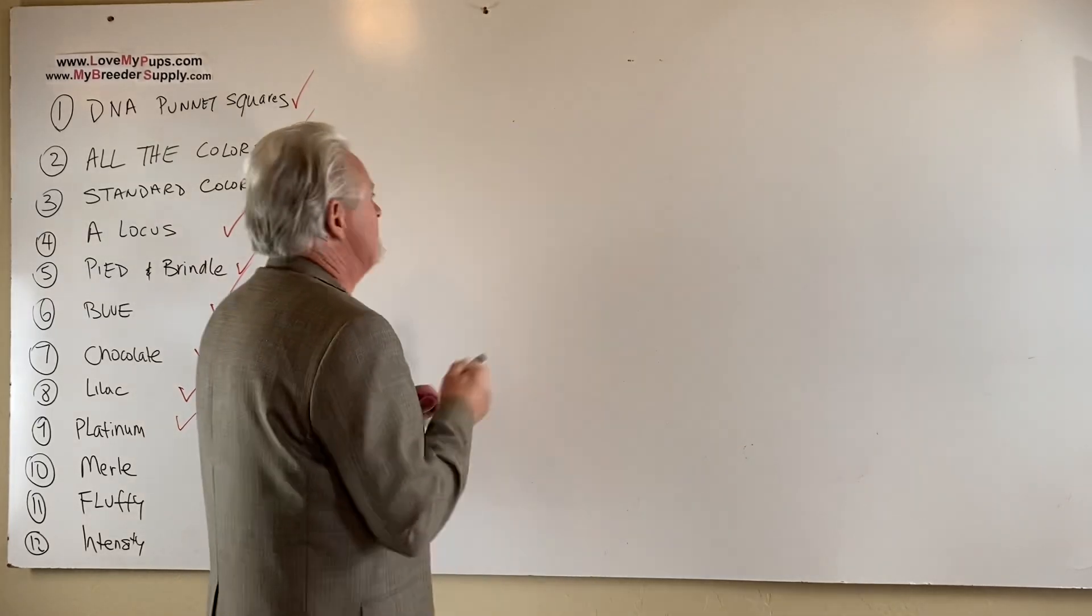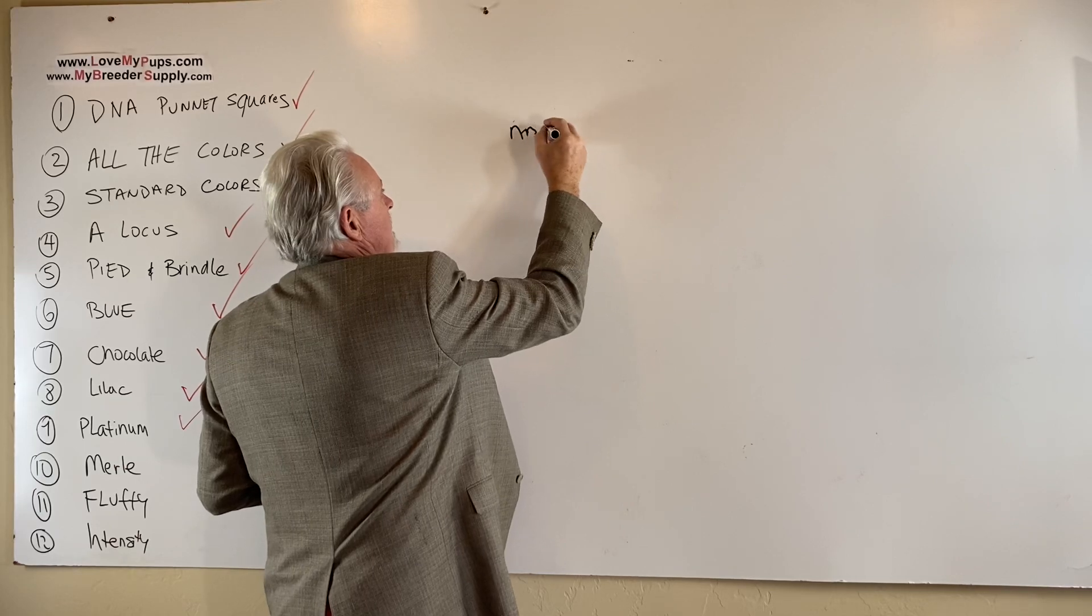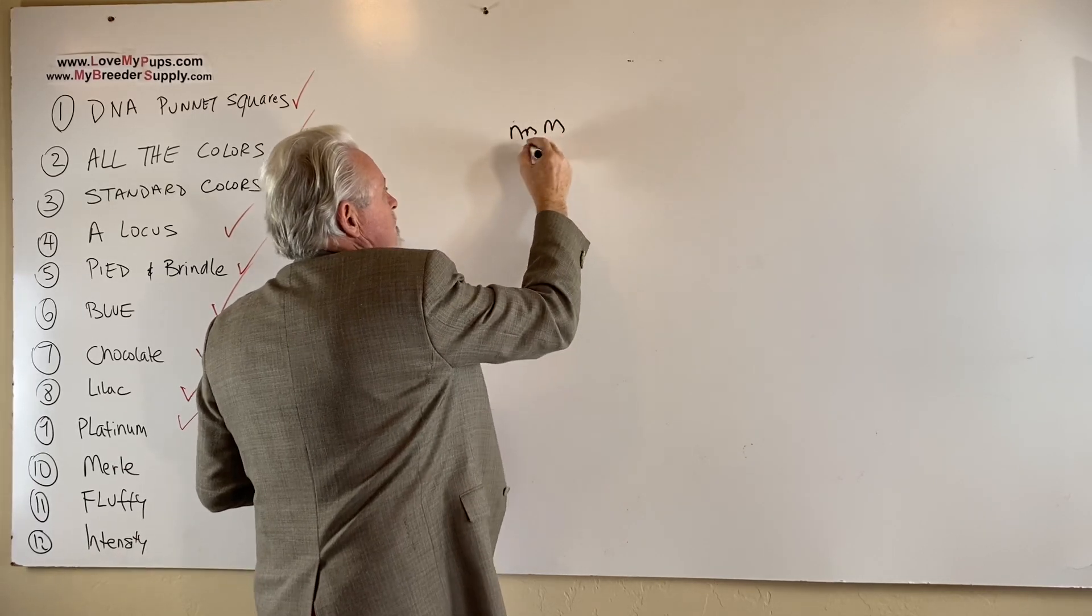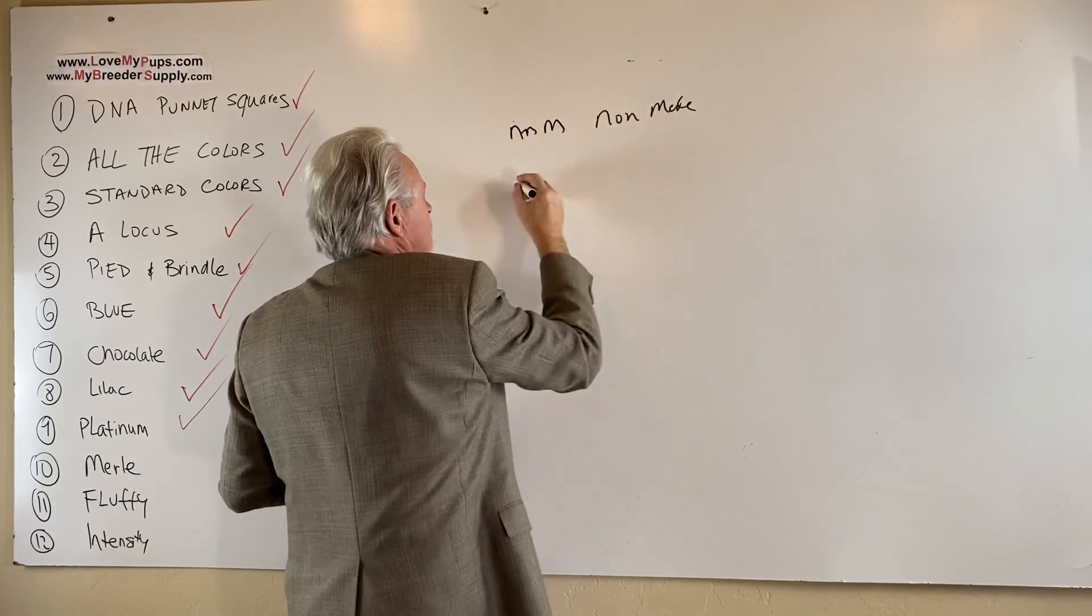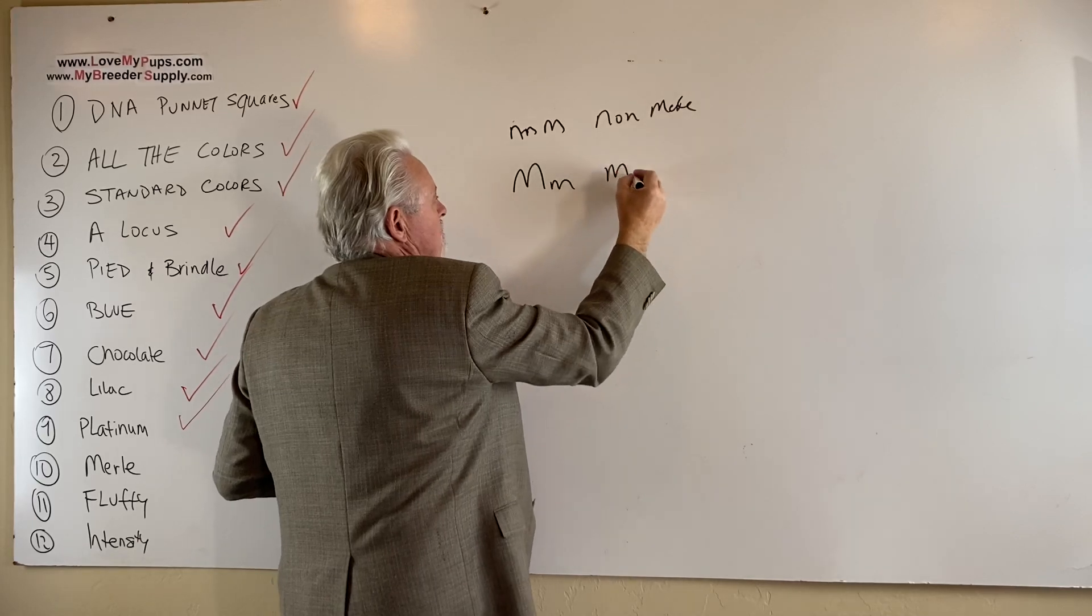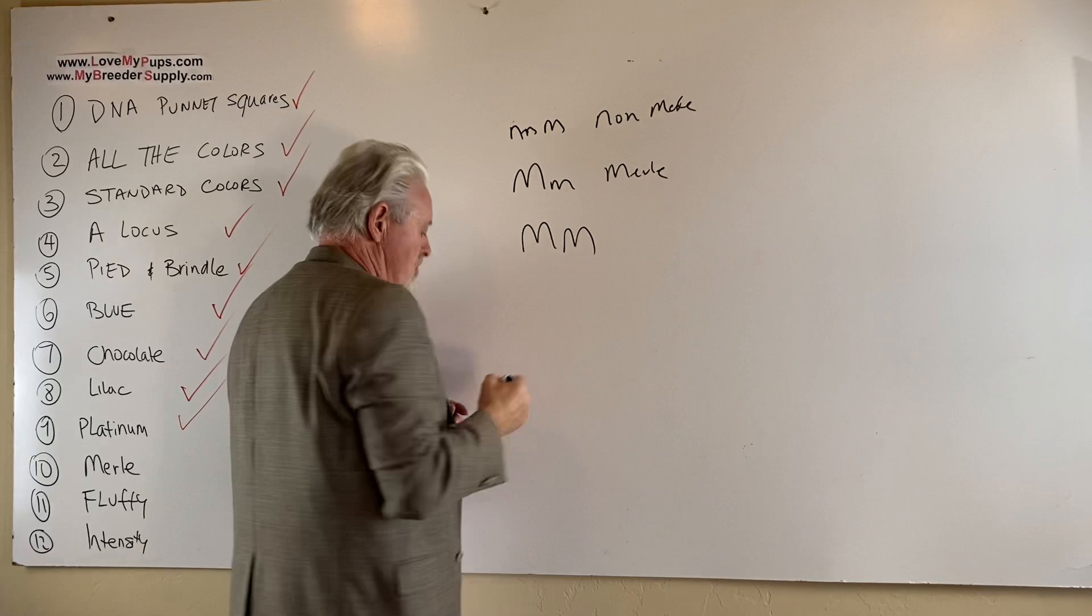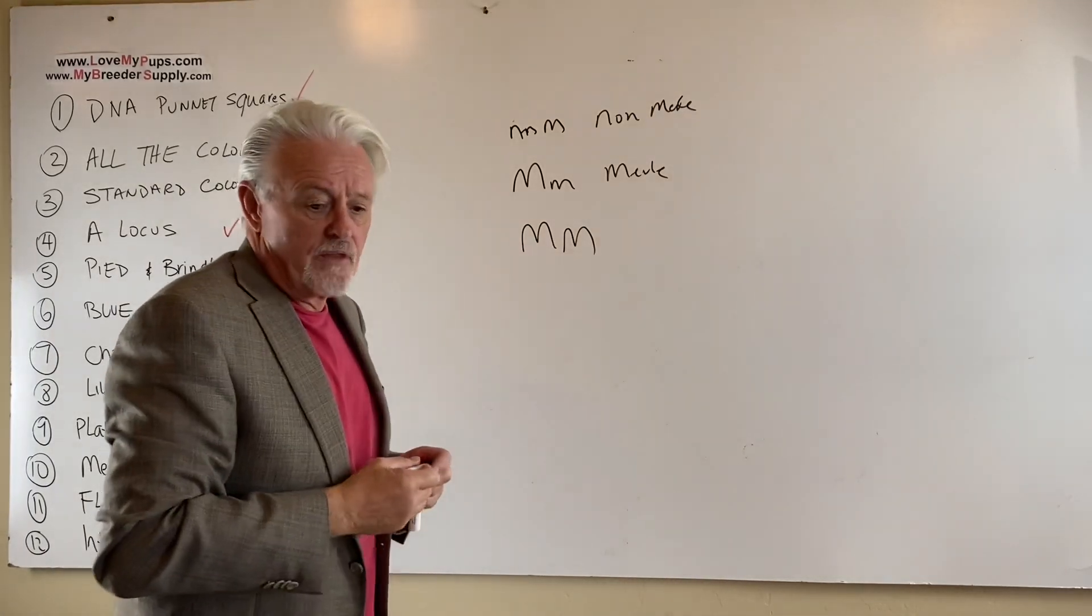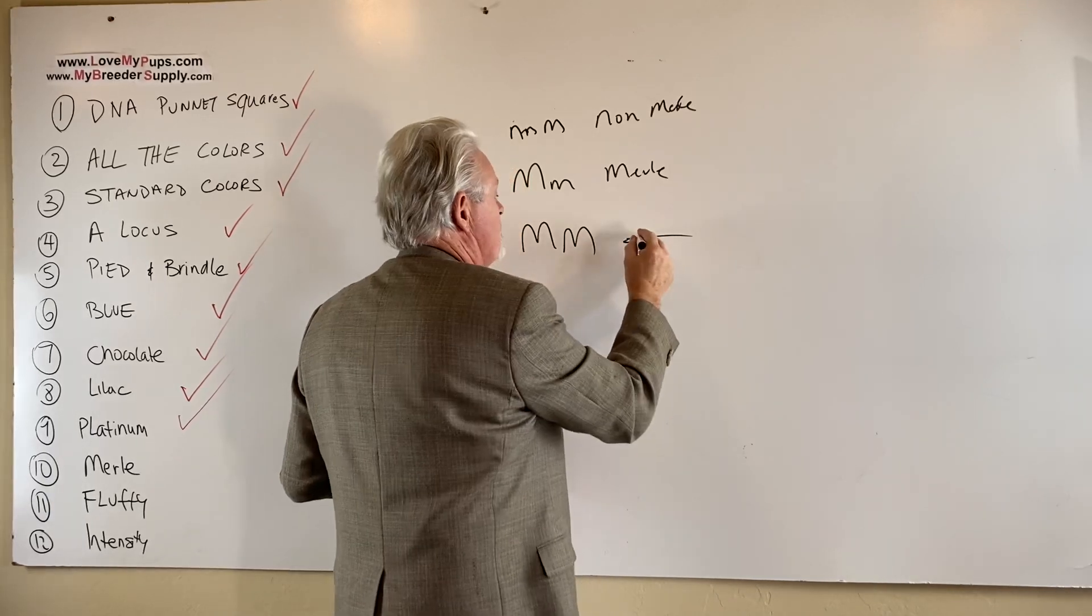Merle is a little bit, you've got to be careful with Merle. So the genetics, when you get back a test, your dog will either be little m, little m, that is a non-Merle. That's a non-Merle dog, which most dogs are. Or it'll come back big M, little m and there's your Merle. You do not want this one. You do not want two copies of Merle. And the reason for that is that these dogs have health issues with blindness and deafness.